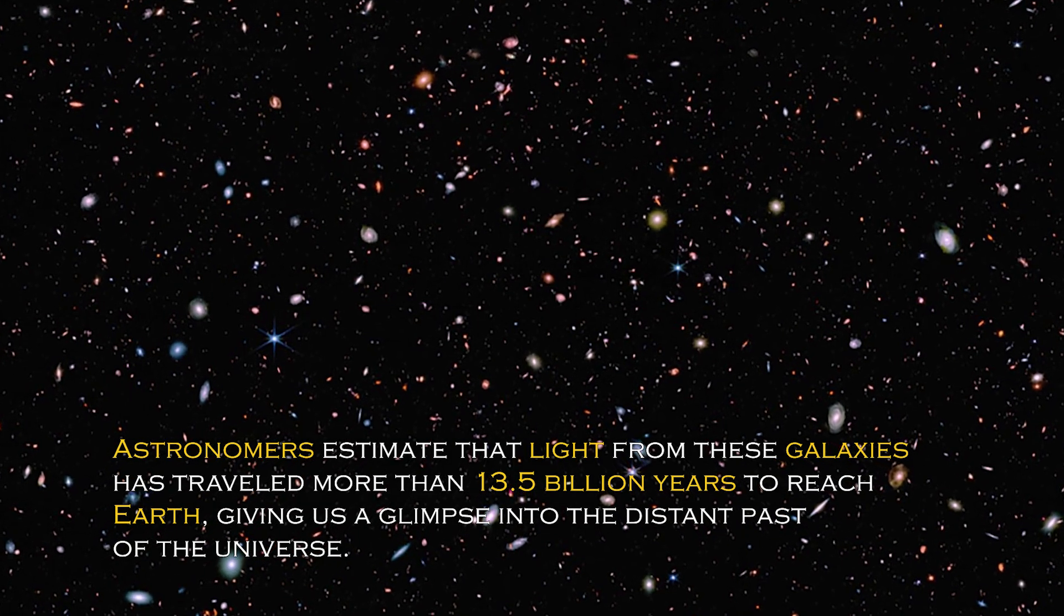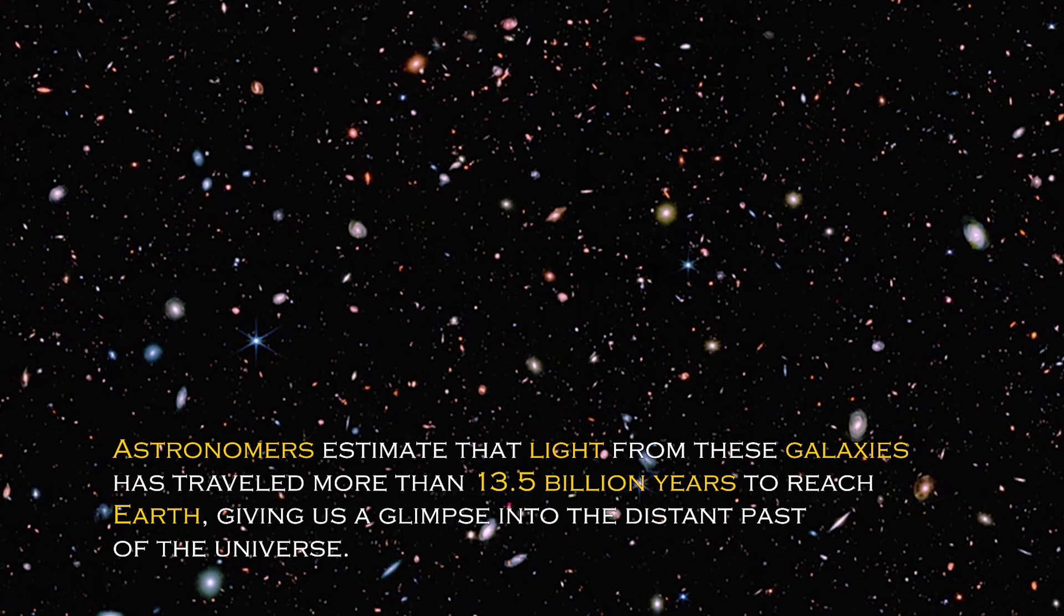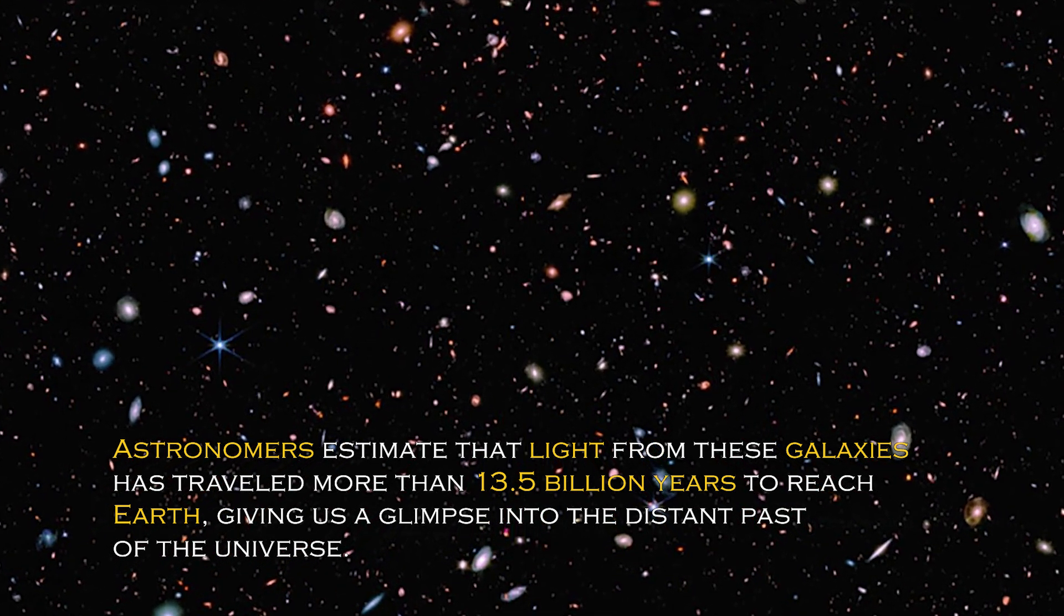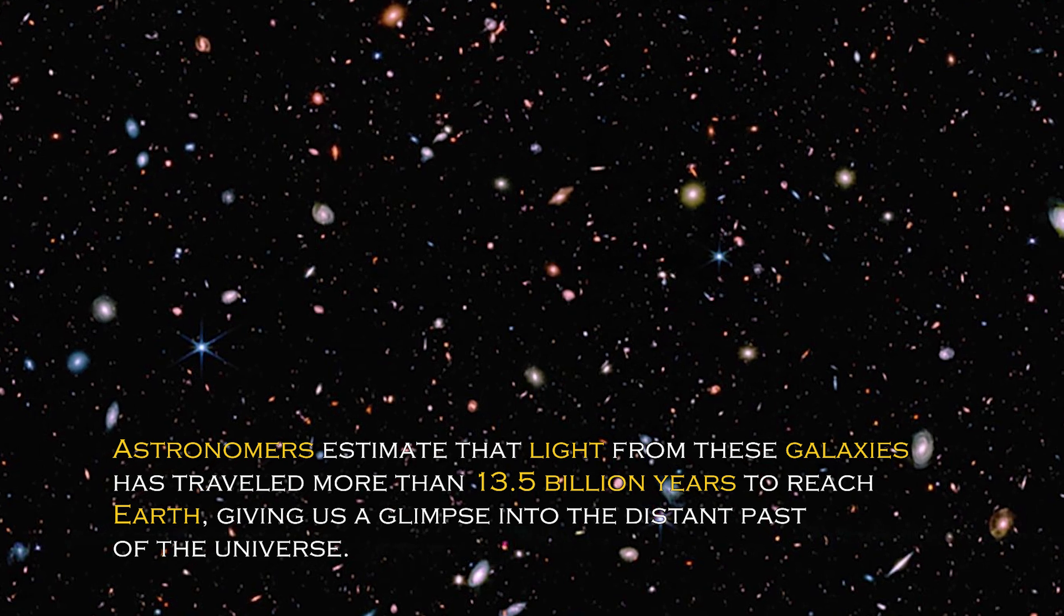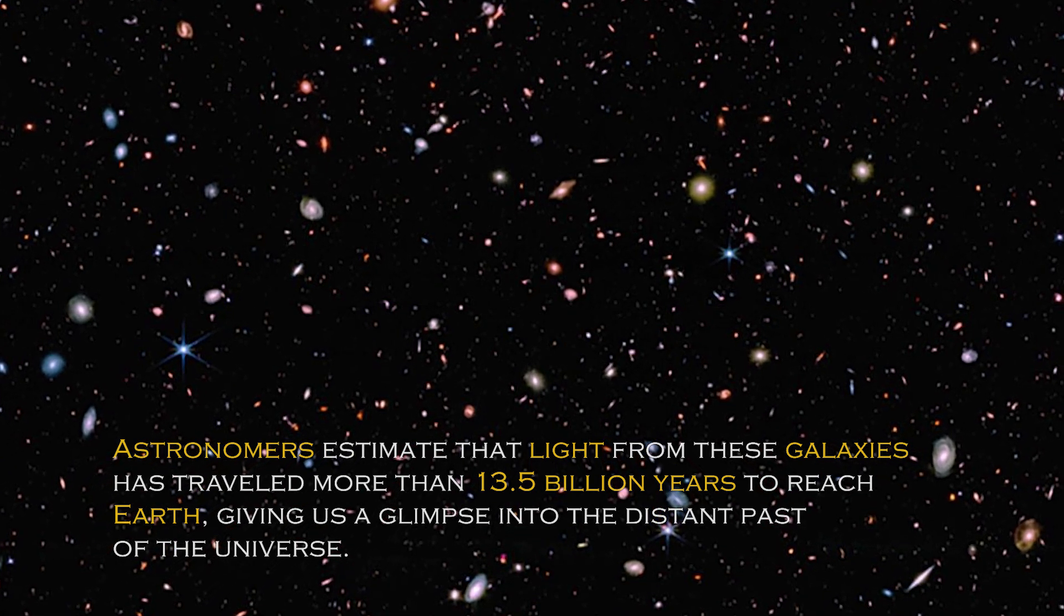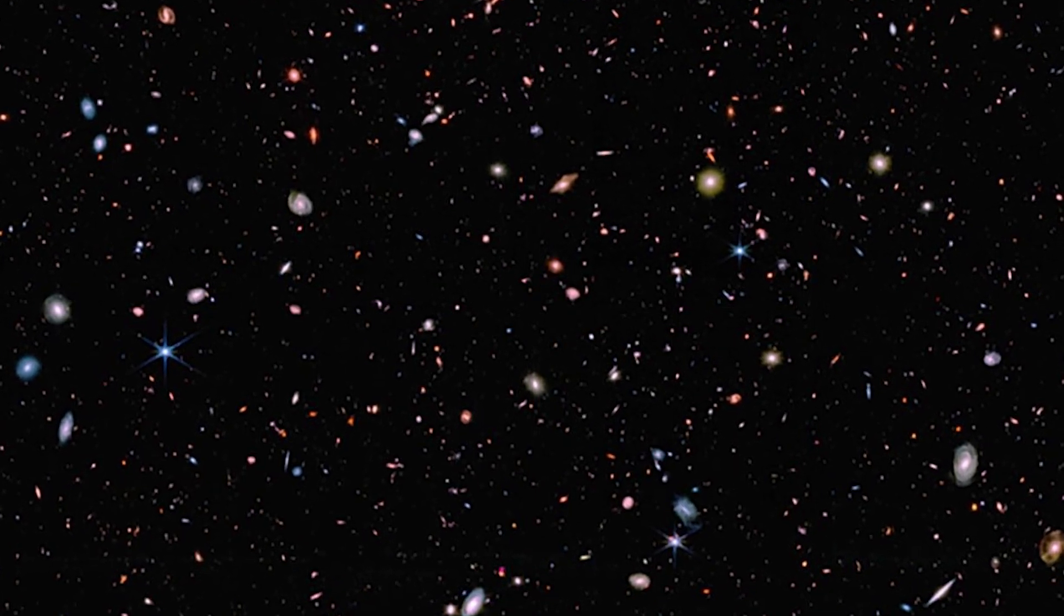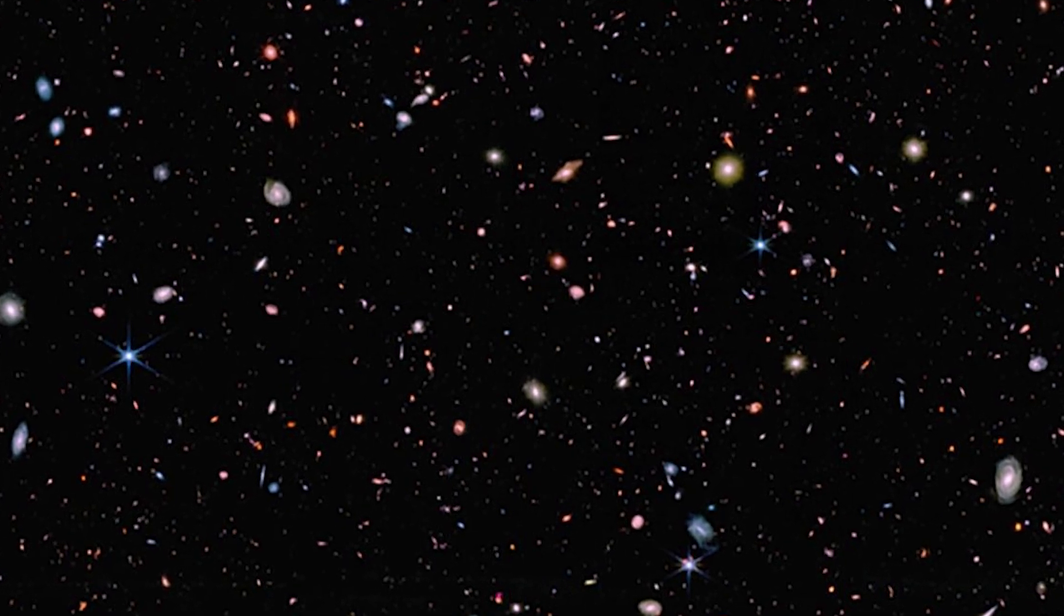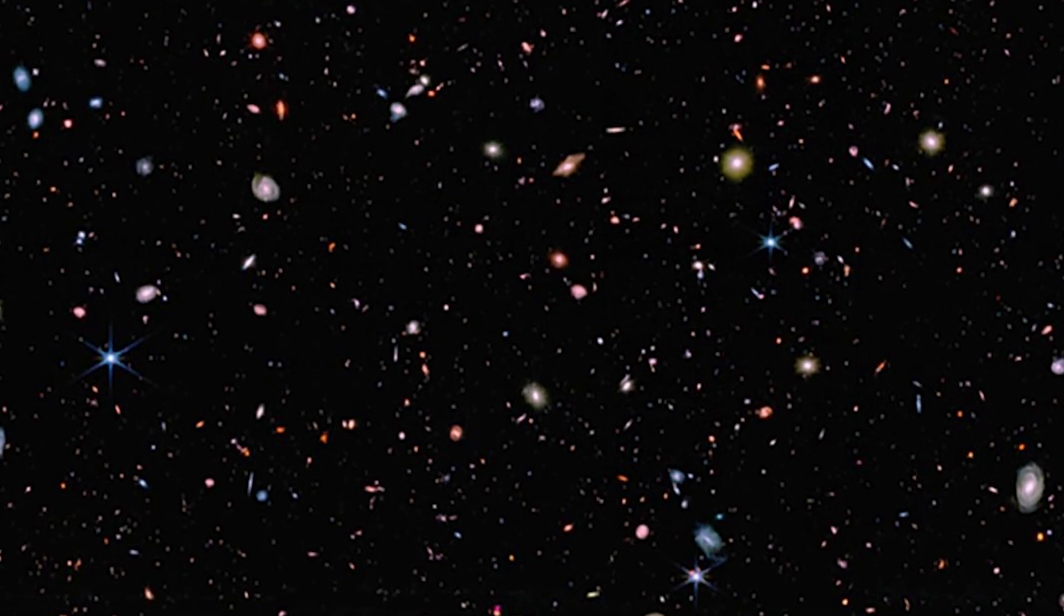Astronomers estimate that light from these galaxies has traveled more than 13.5 billion years to reach Earth, giving us a glimpse into the distant past of the universe. These galaxies were discovered when the universe was young, which sheds light on how quickly the first generations of galaxies emerged.